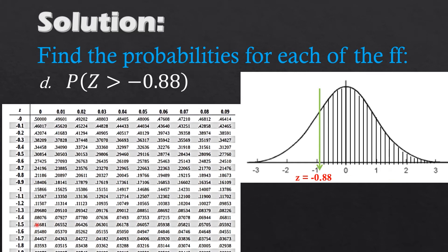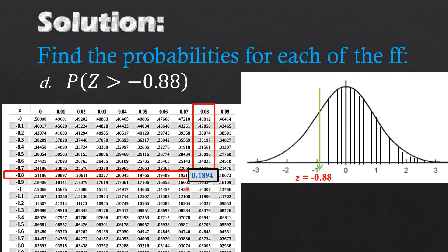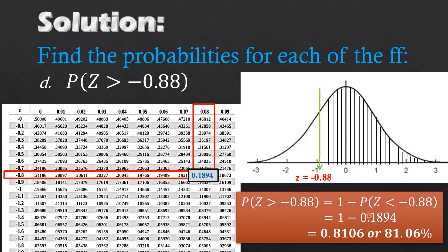We look at the negative z-table: row negative 0.8, column 0.08. The intersection gives 0.1894. So the area to the left of negative 0.88 is 0.1894. However, this is not the probability for our region, since we need the area to the right.